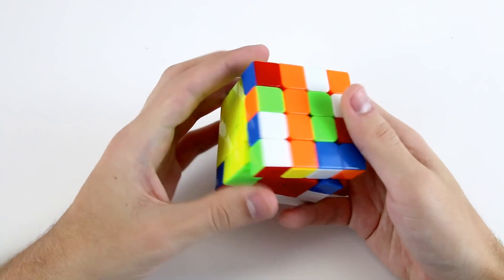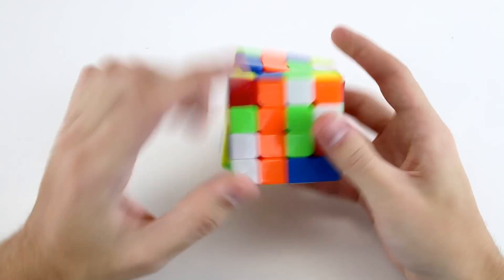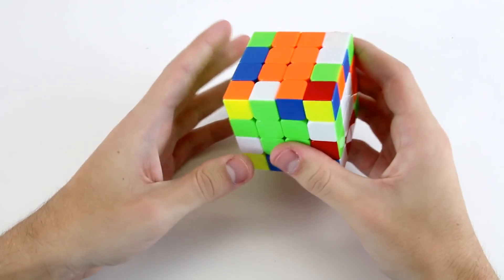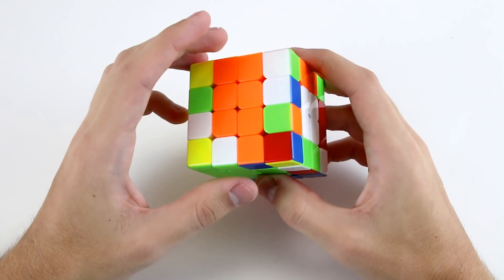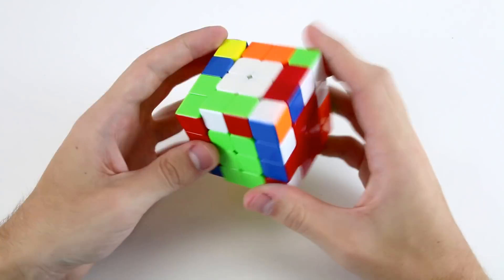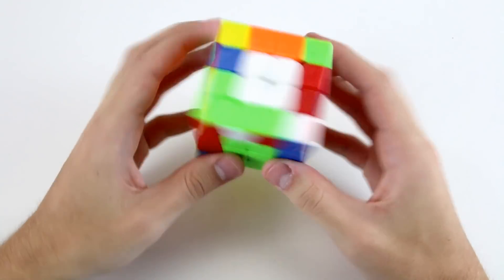And then finish off the orange and the green centers like so and luckily enough this last yellow cross piece was already formed so I'll just put it into the cross position and then start with my edge pairing.